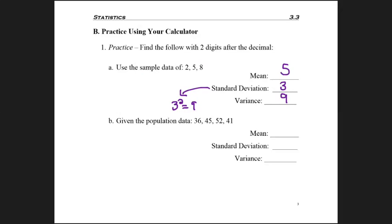Okay, what about the second set of data? Have you gone ahead and taken the population data of 36, 45, 52, and 41, and calculated your values there? For the mean, you should be getting 43.5.